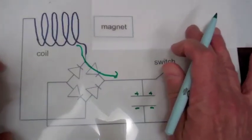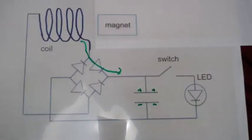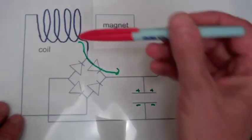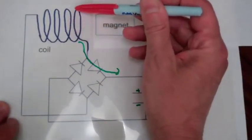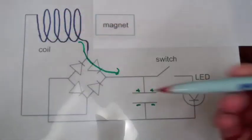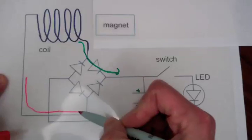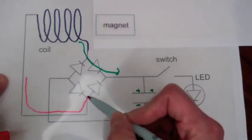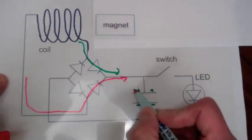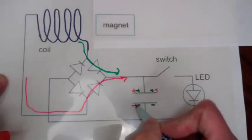When the magnet is sliding out, the field is decreasing, and so now there will be a clockwise current generated in the coil. The current will be flowing like this, this diode will block the current, this one will let it pass, and again, positively charge the top plate.